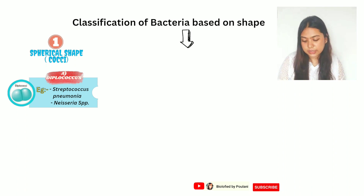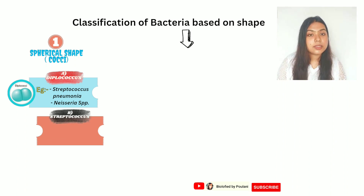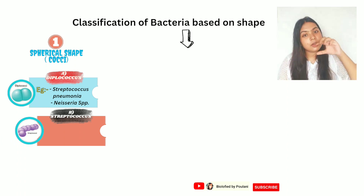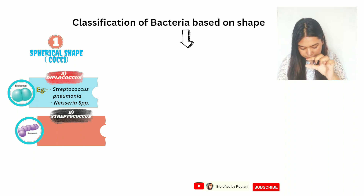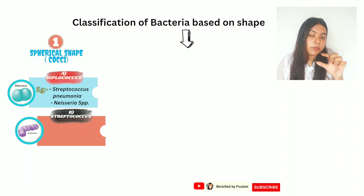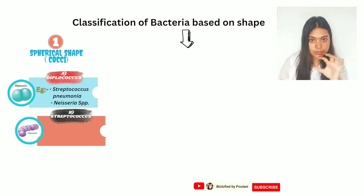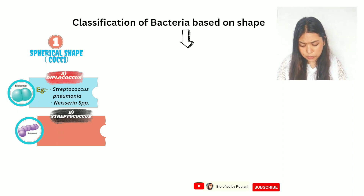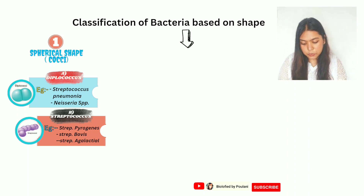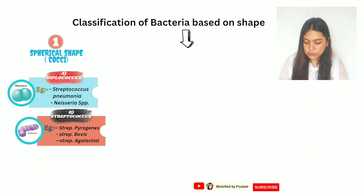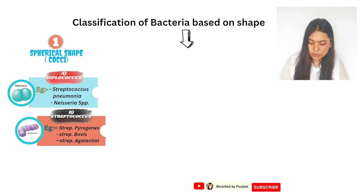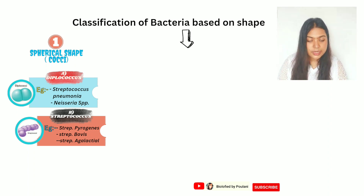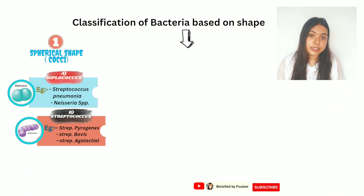Streptococcus shape — these are arranged in chains of circular-shaped microorganisms. Streptococcus pyogenes is known to cause sore throats in humans. Streptococcus bovis and Streptococcus agalactiae are known to cause colonic diseases and urinary tract infections.